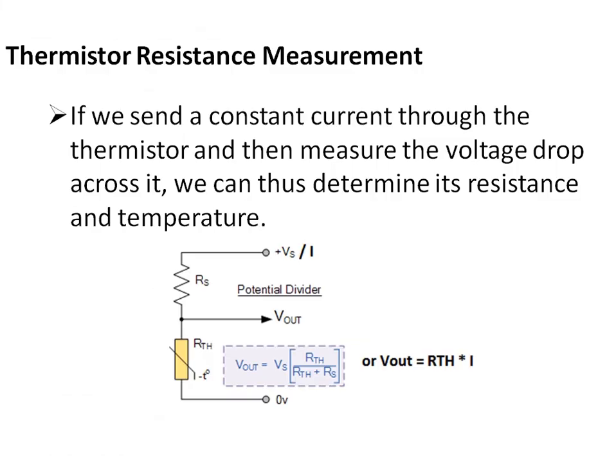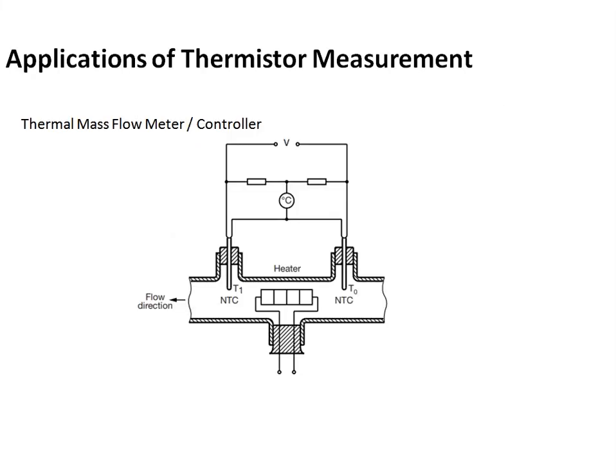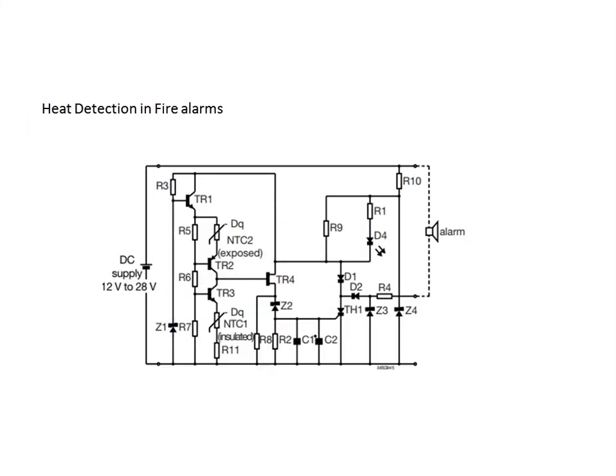Thermistor resistance can be measured by applying a voltage across a bridge circuit, or by passing a constant current and measuring the voltage drop across the thermistor, which is then correlated to temperature. Other applications include use as a heating element in thermal mass flow controllers or flow meters, and as a heat detection element in fire alarms. Thank you for watching.